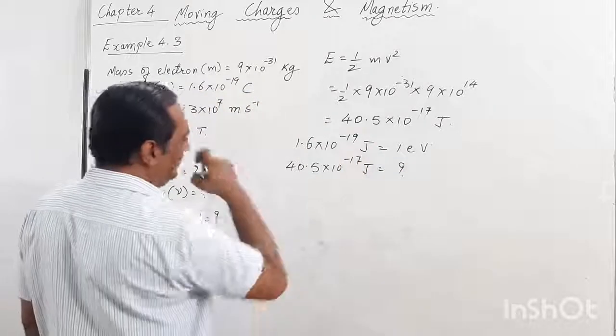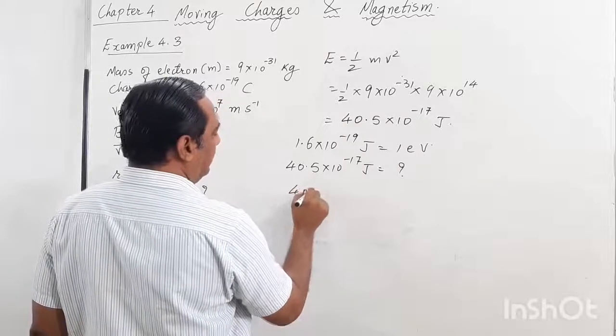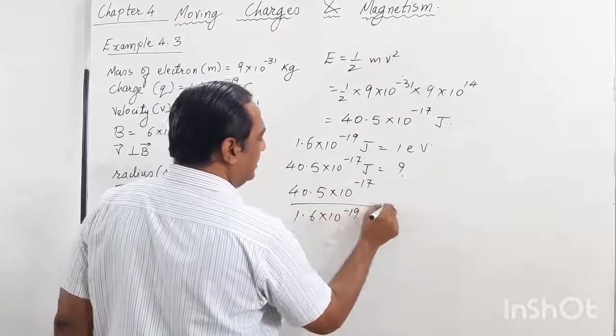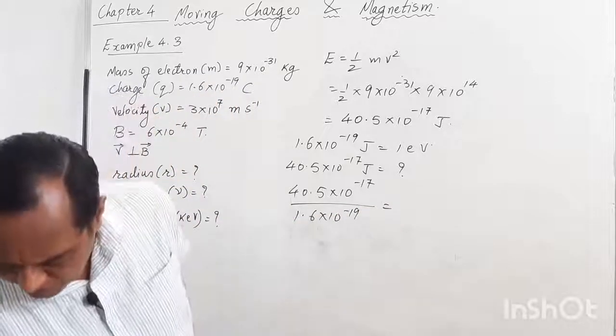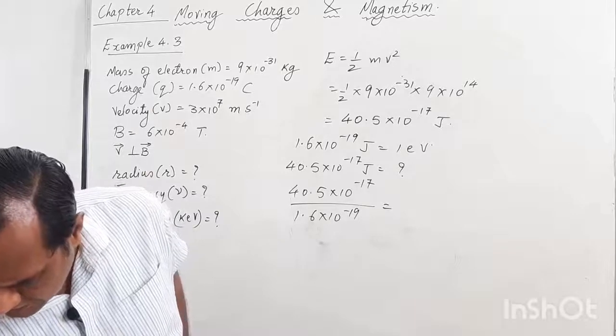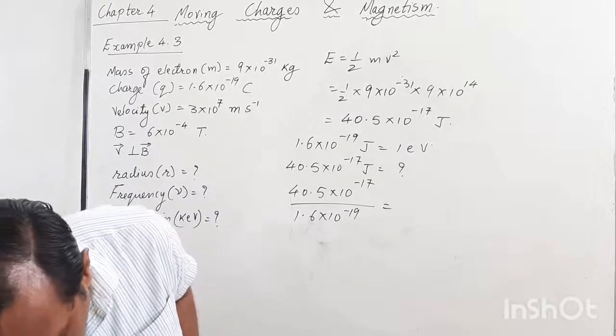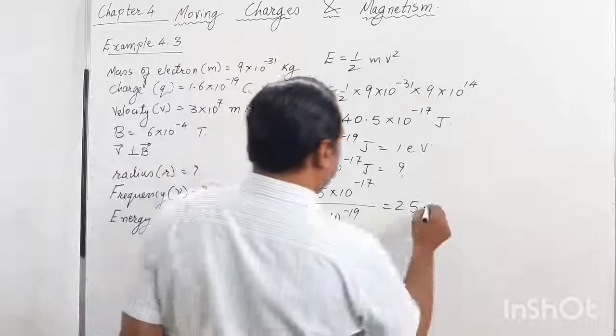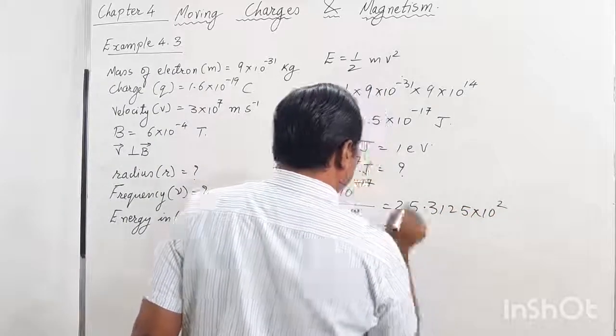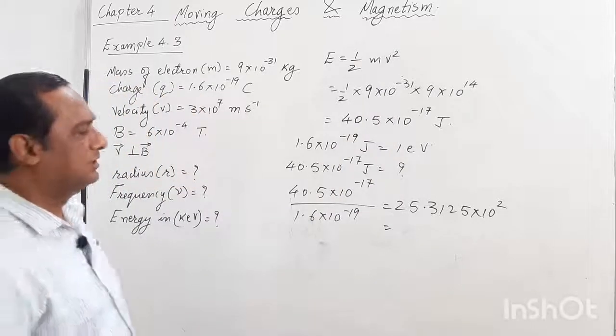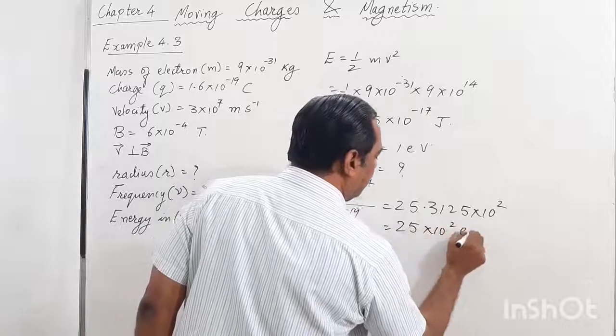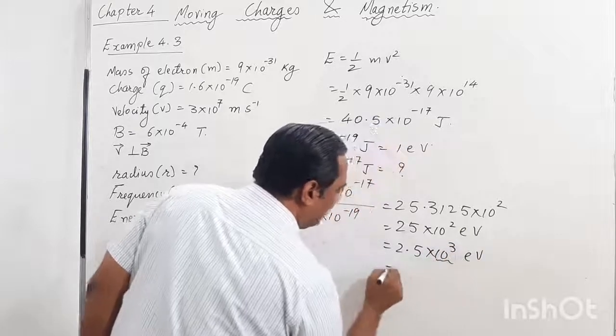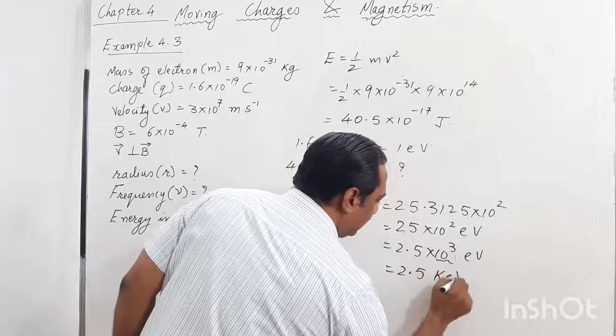We divide 40.5×10⁻¹⁷ by 1.6×10⁻¹⁹. So 40.5 divided by 1.6 gives 25.3125×10². We can write this as 25×10² electron volts or 2.5×10³ electron volts, which is 2.5 kilo electron volts. That is the answer.